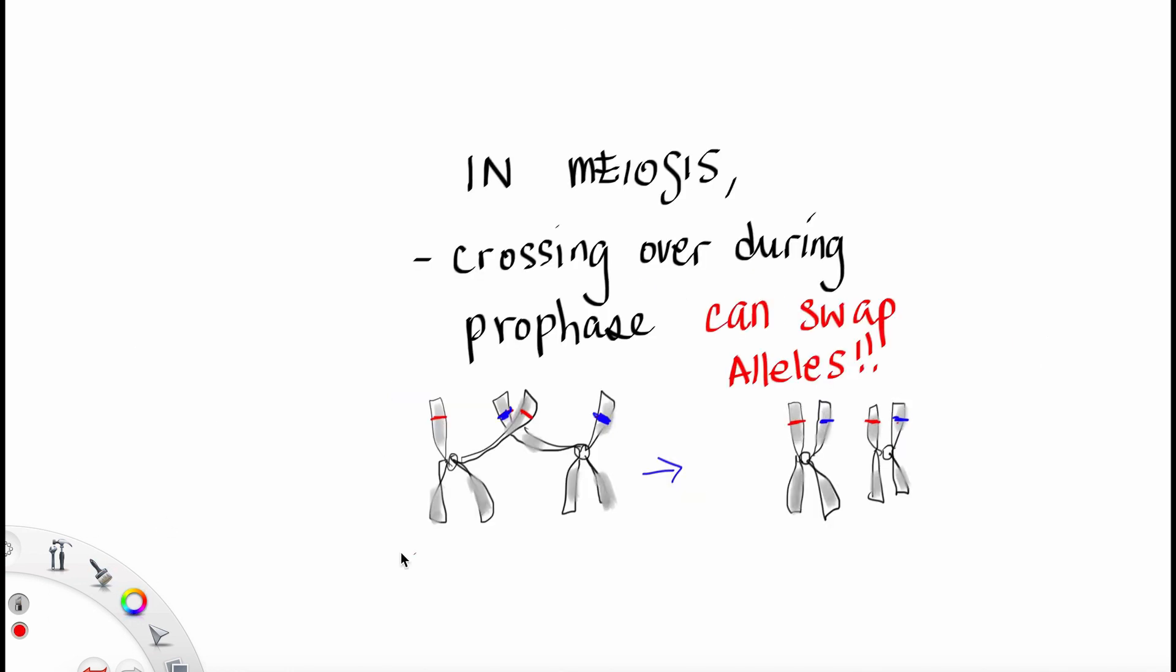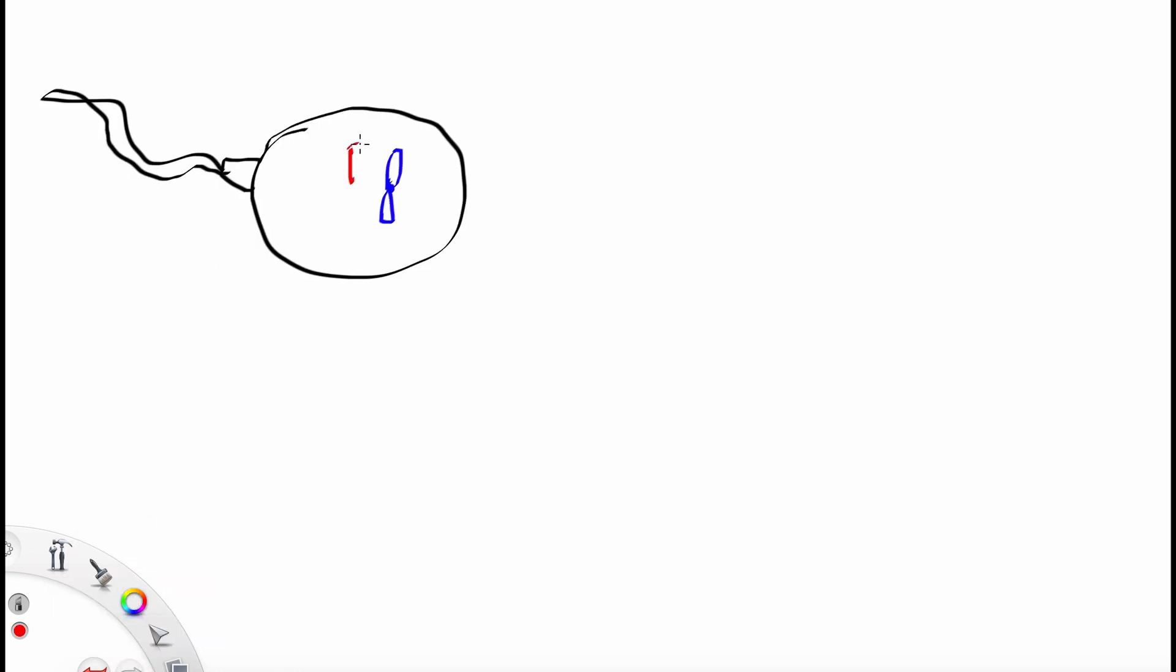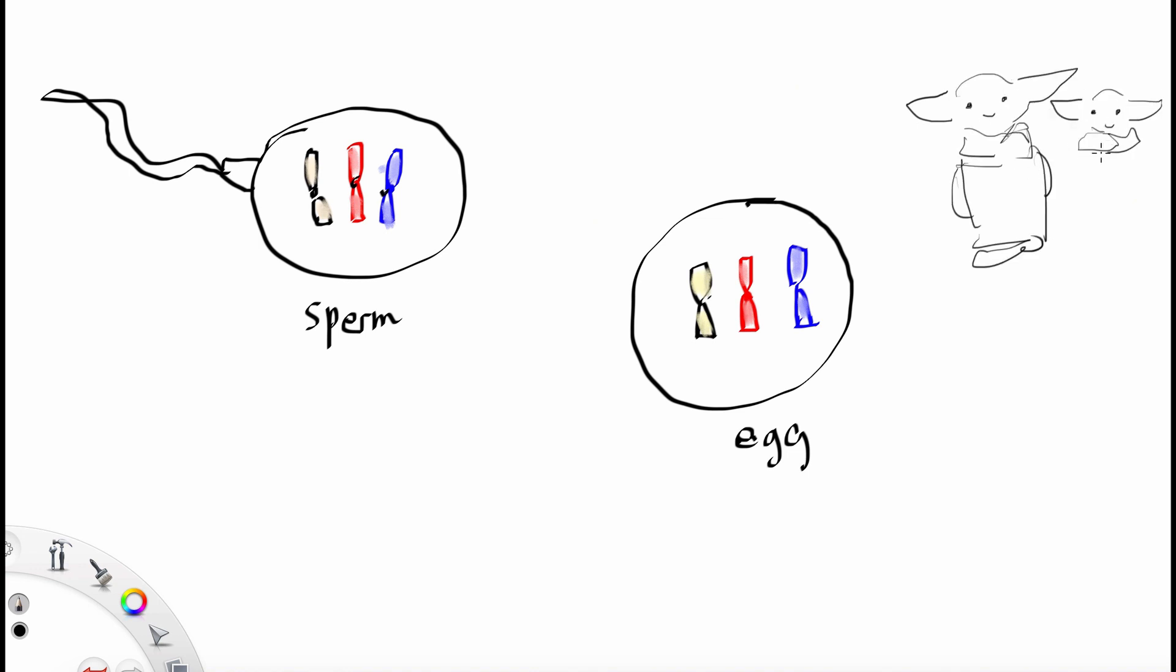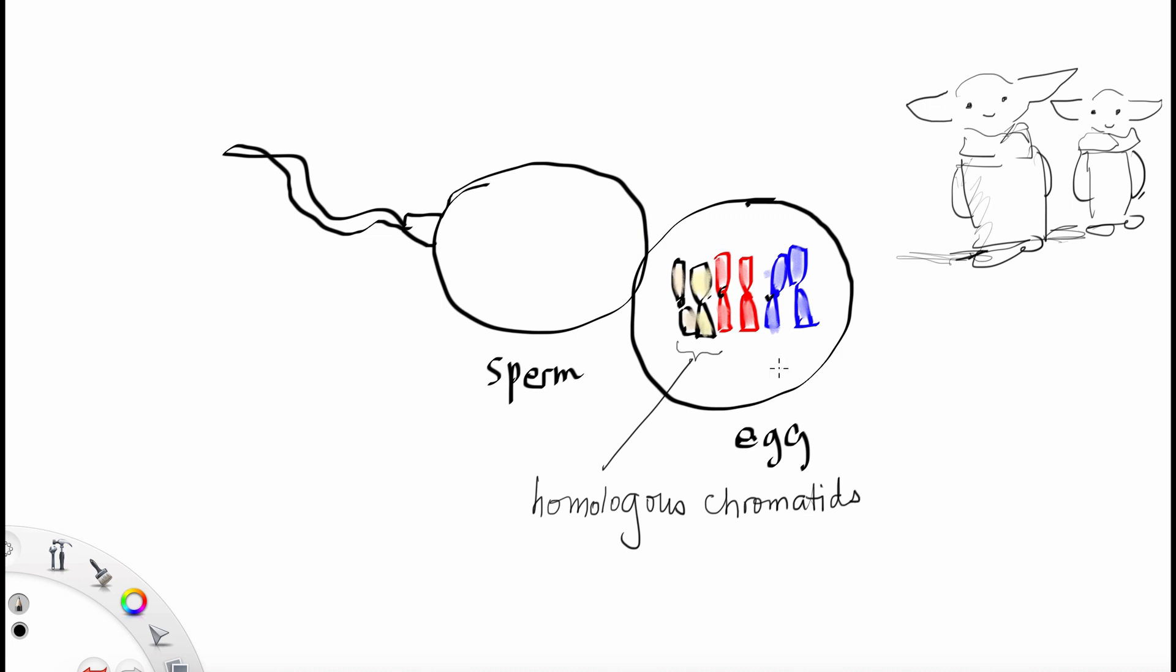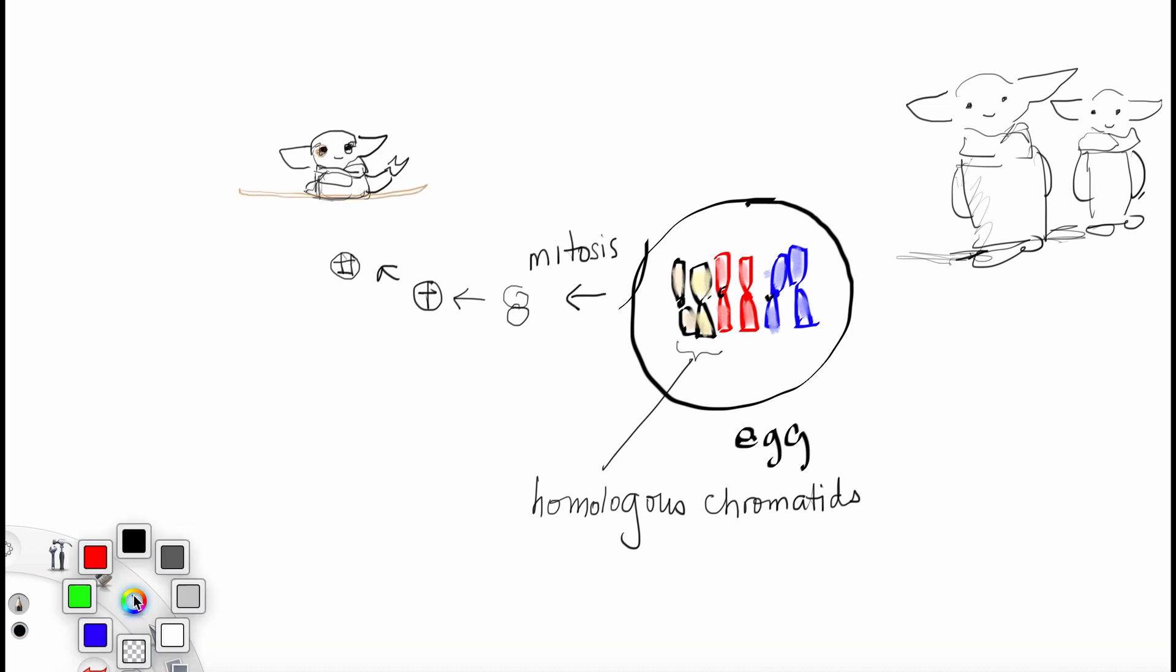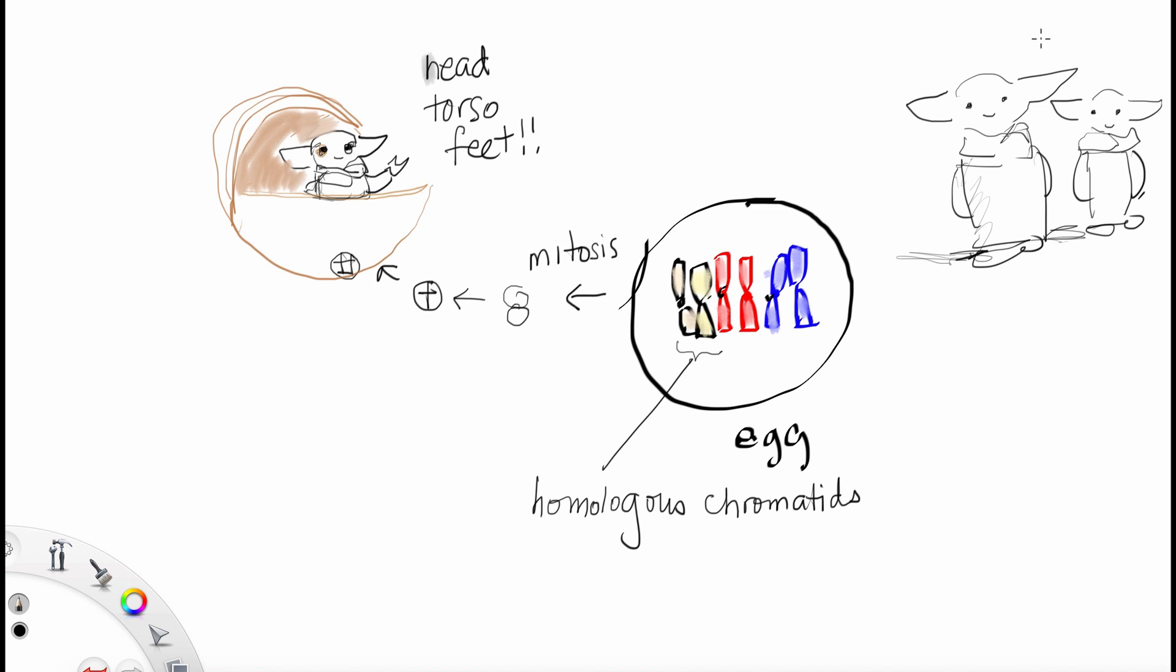In meiosis, one of the main differences between meiosis and mitosis is we have this funny crossing over during prophase 1, where the homologous chromosomes actually swap alleles. So in a normal meiosis, it produces sperm and egg, each with half the number of chromatids that we need to survive for this creature from another galaxy. And after fertilization, then these homologous chromatids come together. And after lots and lots of rounds of mitosis, then we end up with homologous chromatids, which make a head and torso and feet. And we get a lovely child.